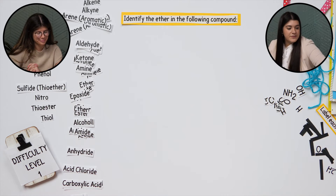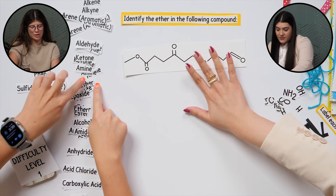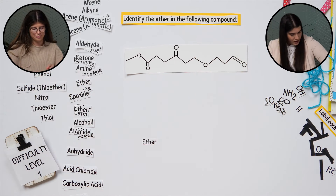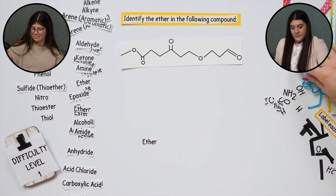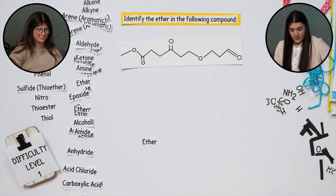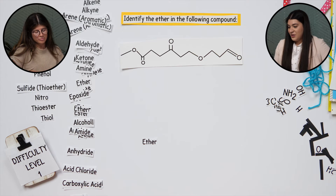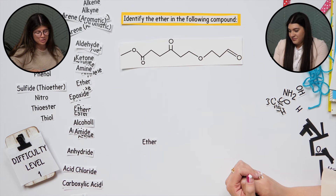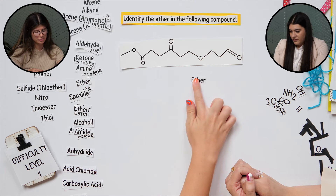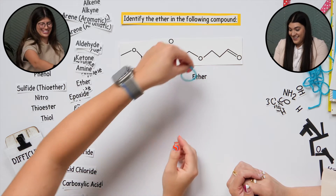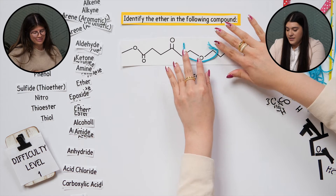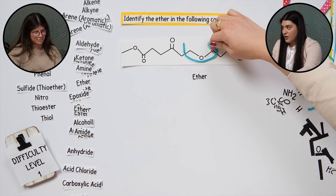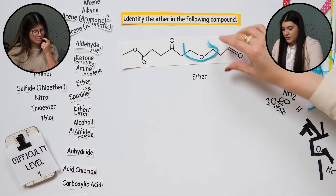This next one is asking us to find the ether. Let me double check — yes, this is in the right position. The ether would be this guy right here. Perfect. I'll make it a little larger so we can see that it's an oxygen connected to two R groups.